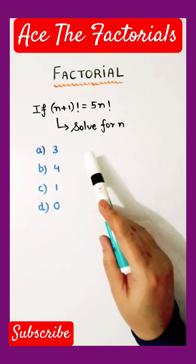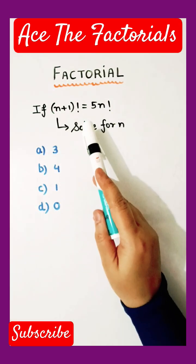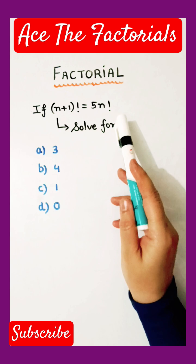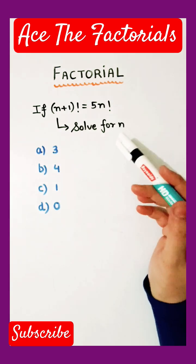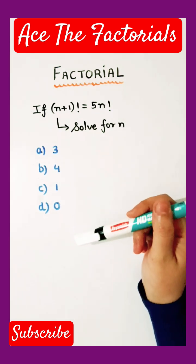Can you solve this factorial question? If n plus 1 factorial equals 5n factorial, we have to find the value of n. Four options are given.